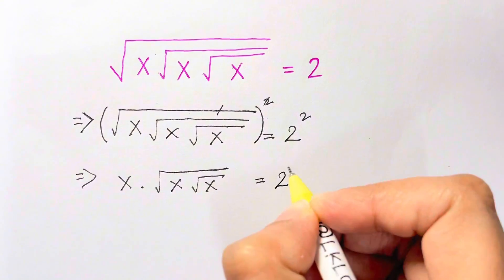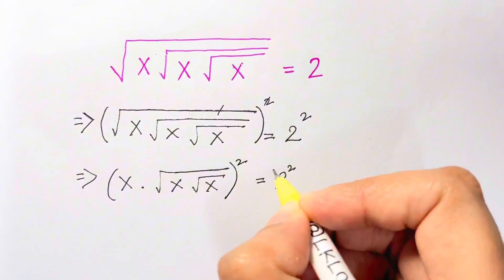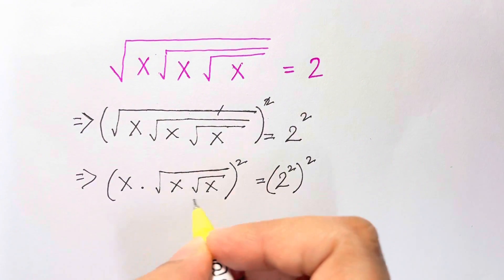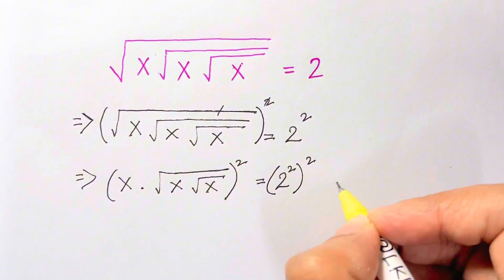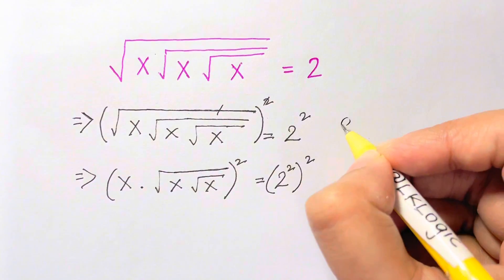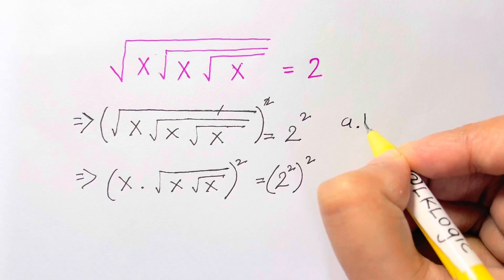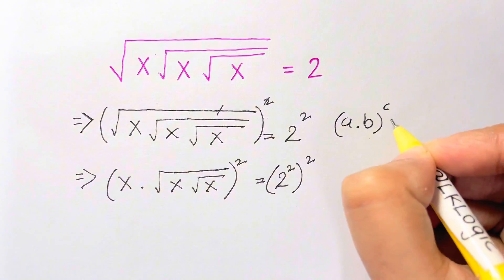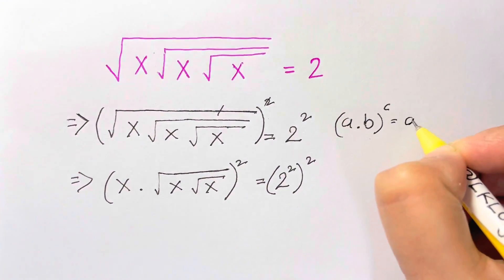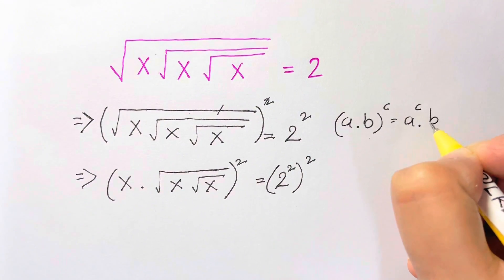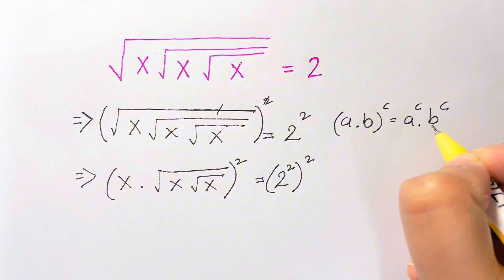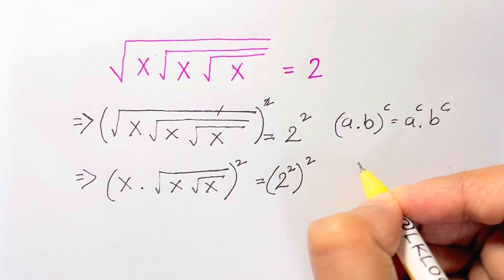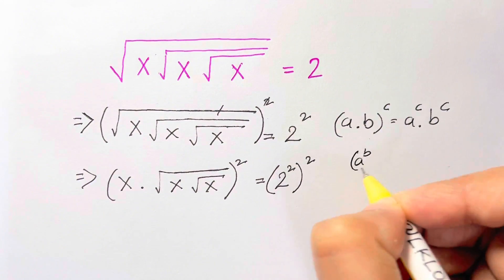Squaring again on both sides — we have to square the whole square. Inside the brackets, it's similar to the identity (a × b)^c. Whenever you have a product to a power, the power is distributed to each factor: a^c times b^c. On this side we have 2 squared, the whole square.